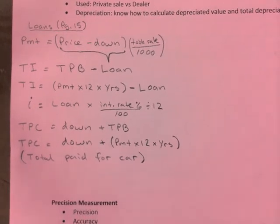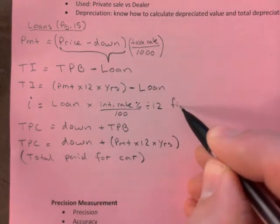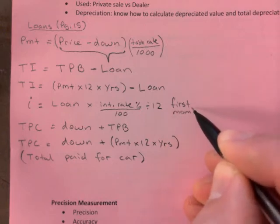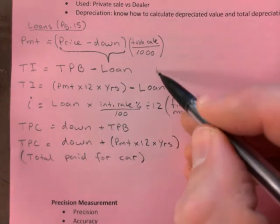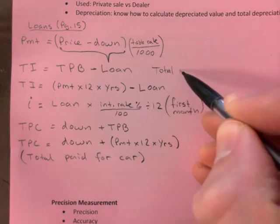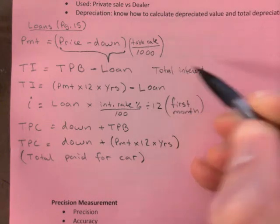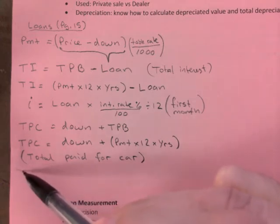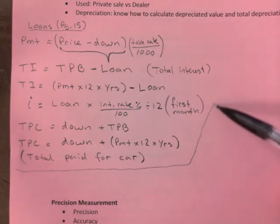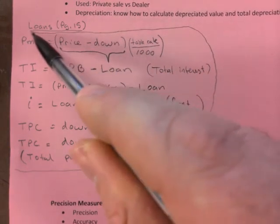That's what that stands for. So if the question asks, how much did you pay for this car in total, you take the down payment and what you've paid the bank, that's in total. So this is first month, that lowercase i, this is total interest. And the top one, of course, is payment. All of this, this is basically a must have for loans. If you want to know how to work loans, you need this.